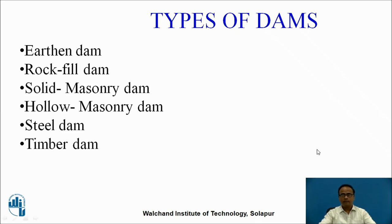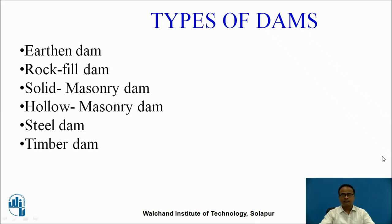Before going to Earthen Dam, we first understand what are the different types of dams. The types of dams depend upon their cross-section as well as the material used for construction. Some types based on material used are: Earthen Dam, Rockfill Dam, Solid Masonry Dam, Hollow Masonry Dam, Steel Dam, and Timber Dam. The name Earthen Dam itself indicates that we are using natural material for the construction of the dam.